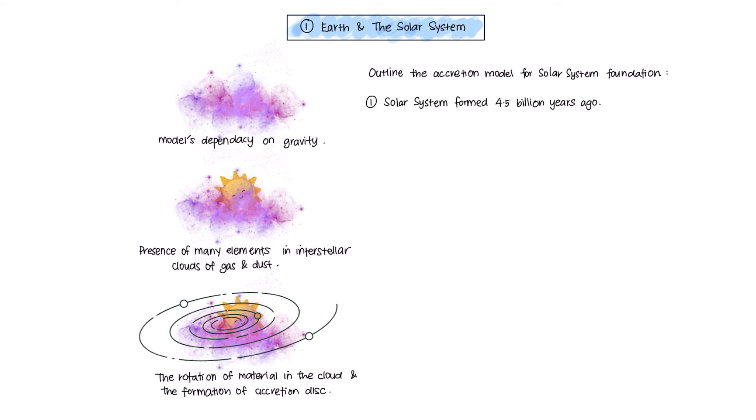Solar system is formed 4.5 billion years ago. A nebula begins to contract, collapsing it on itself under the force of its own gravity. The atoms collided together, generating heat. Temperature becomes high enough for nuclear fusion to occur. Now, this is how the Sun is formed.